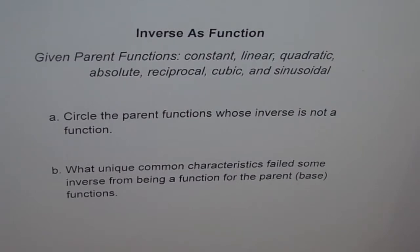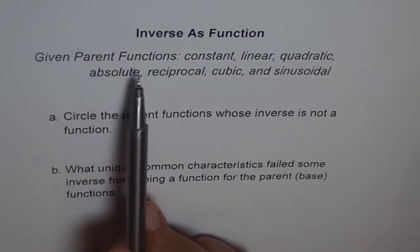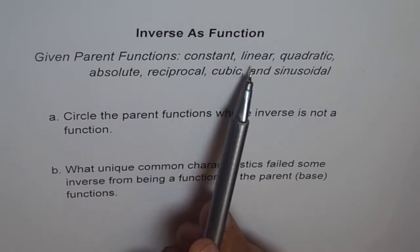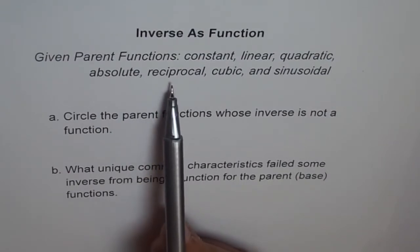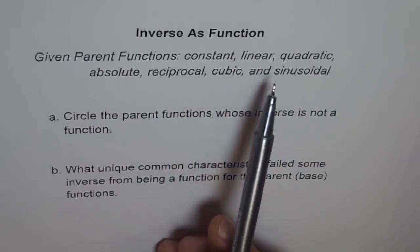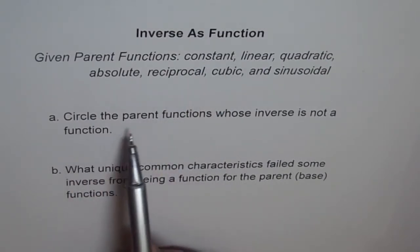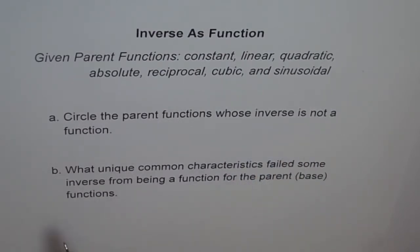Let's see which parent functions will also give us an inverse that is a parent function. Here we have a list of parent functions we will be considering: constant function, linear function, quadratic function, absolute function, reciprocal function (also known as a basic rational function), cubic function, and sinusoidal function. The question is: circle the parent functions whose inverse is not a function.